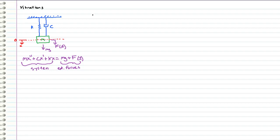Now in this video, I want to point out a very important strategy whenever we approach engineering problems, and that is our choice of coordinate system. Because if you choose a convenient and strategic coordinate system, you can actually reduce the complexity of your differential equation or of the computations in general. We are going to redraw the exact same system, but choose a different coordinate system.